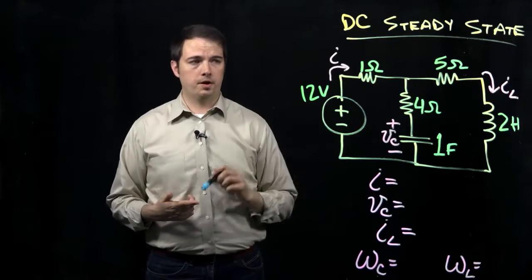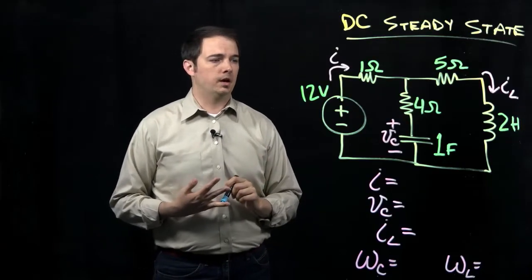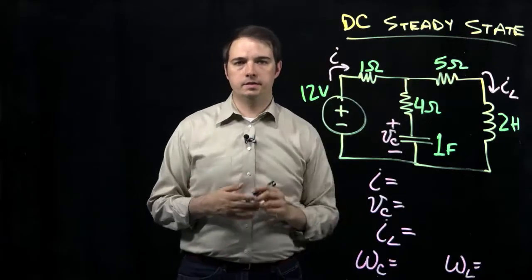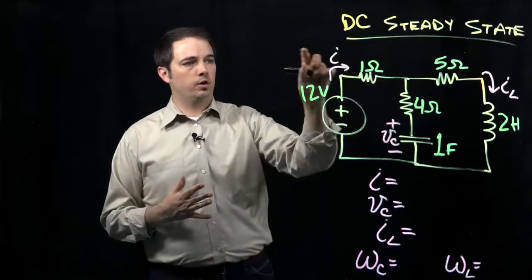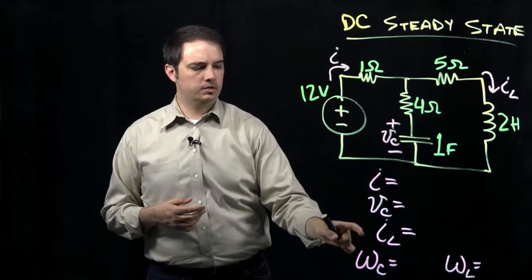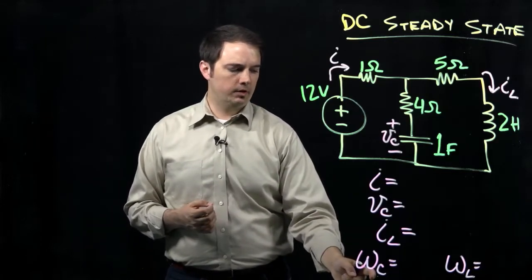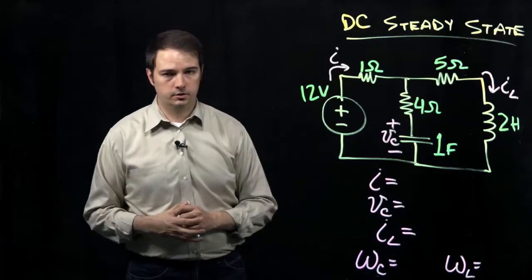We have a voltage source, some resistors, a capacitor, and an inductor. If we're given this circuit and we're told specifically that we're already at the DC steady state condition, then the question is, what are each of these variables that we've indicated: I, V_C, I_L? And then also asking what amount of energy is stored in both the capacitor and the inductor.